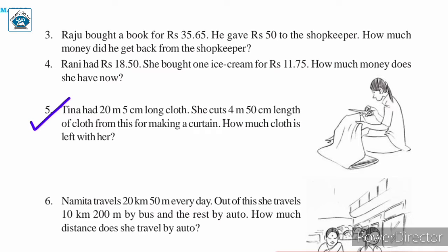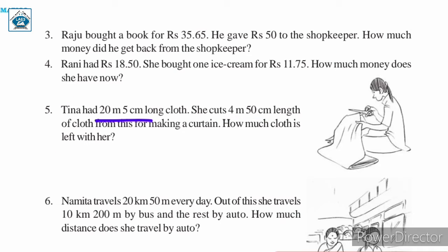Question number 5. Tina had 20 meter 5 centimeter long cloth. She cuts 4 meter 50 centimeter length of cloth from this for making a curtain. How much cloth is left with her? When we need to find what is left, we will subtract. We will convert them into decimal form and then subtract to find the length of cloth left with Tina.